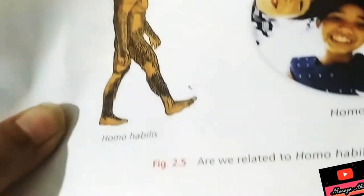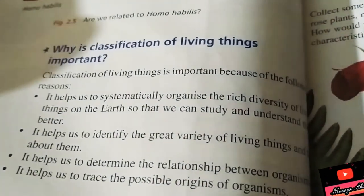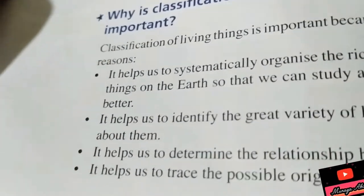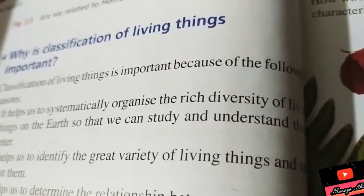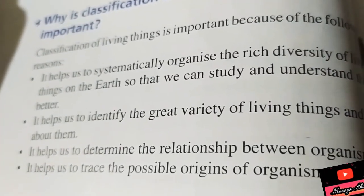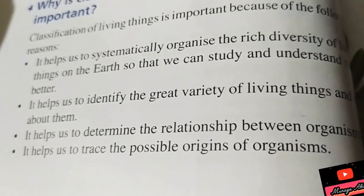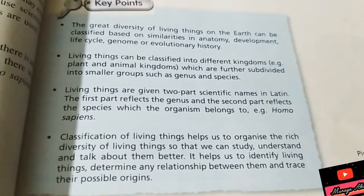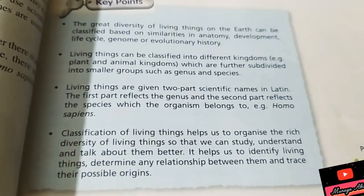Page 32 contains the answer to question number one: why is classification of living things important? You can write these four points: it helps to systematically organize the rich diversity of living things so we can study and understand them better; it helps us identify the great variety of living things; it helps determine relationships between organisms; and it helps trace possible origins of organisms. The key points on page 33 summarize everything studied.